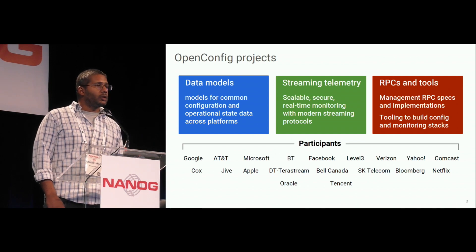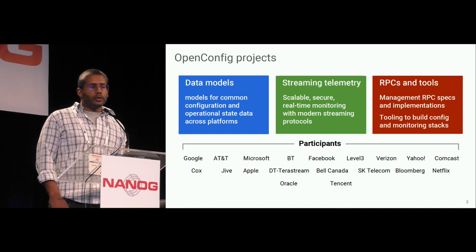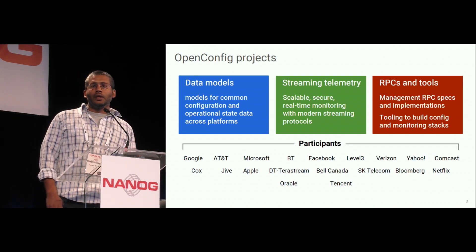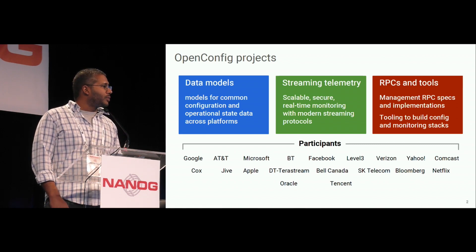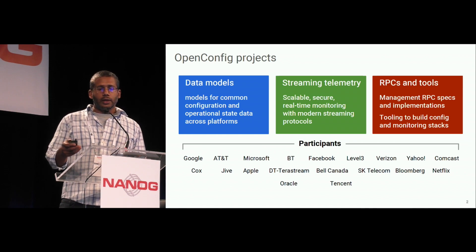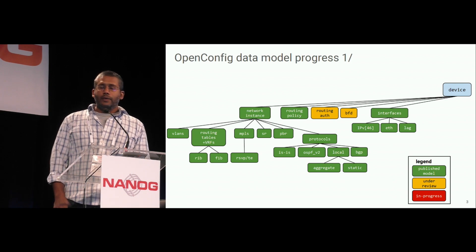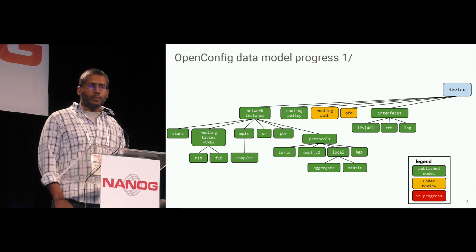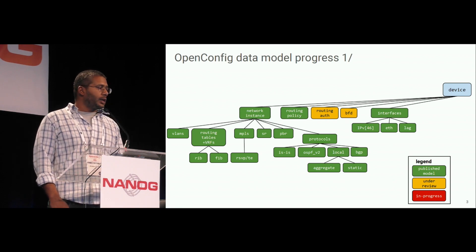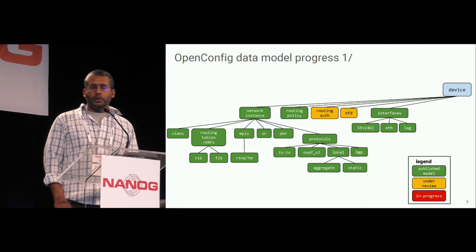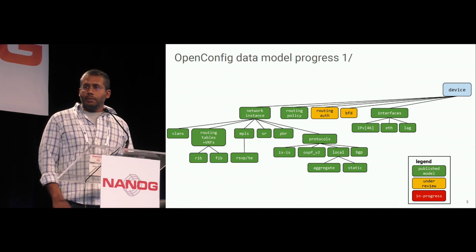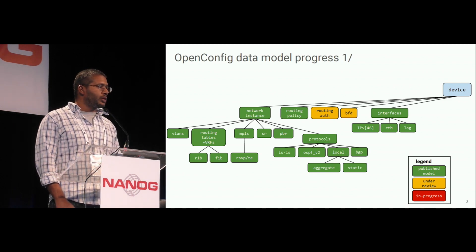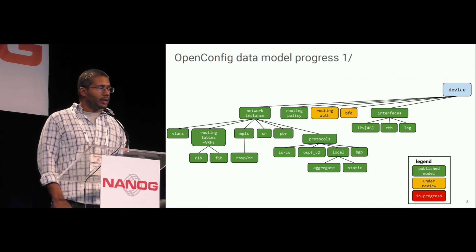Our list of participants has grown quite a bit since we were here last time — we're up to close to 20 participants. I actually left off Cloudflare and Mirchao in my rush; although relatively new, they've been great contributors and have already proposed a bunch of new models. In terms of data model coverage, we're reaching a point where we have reasonable coverage across the configuration space with a few notable gaps. The network instance model is where all the routing protocols live — things like VRFs, FIB, RIB, route redistribution policies, VLANs, MPLS, and segment routing — with a lot of capability bundled up from an L3 protocols perspective.